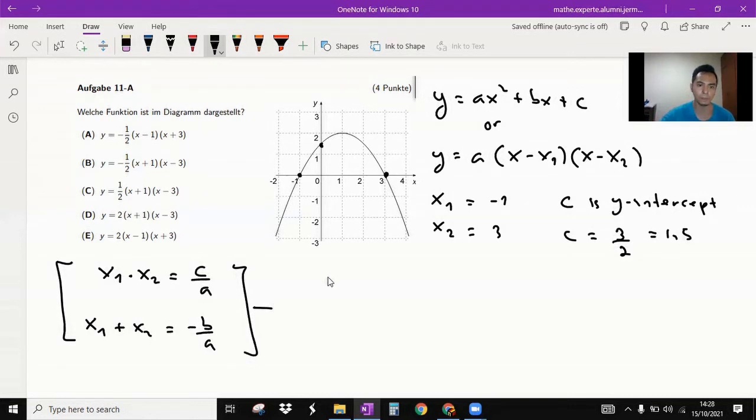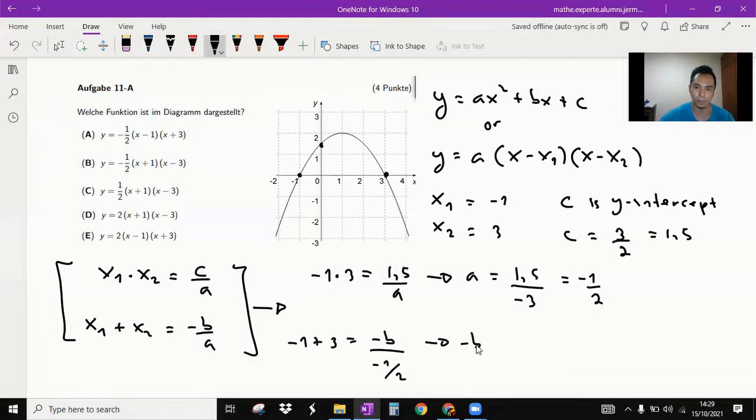Let's apply this. So you have x1 times x2 is minus 1 times 3 is equal to 1.5 over a. So a is equal to 1.5 over minus 3, and it's minus half. So the second one, x1 plus x2 is equal to minus b over minus half. So your minus b is equal to 1, so b is equal to minus 1.